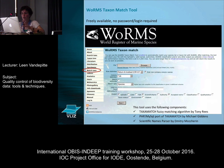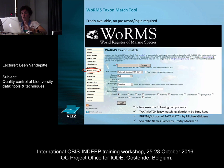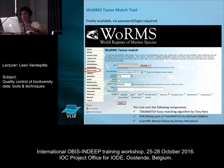So first, on WoRMS — for the people who don't know this — there's a 'match taxa' menu item right there. On WoRMS it's freely available, you don't need a password, you don't need to log in. You can just go there, upload your Excel file or text file, and run it through the taxonmatch.